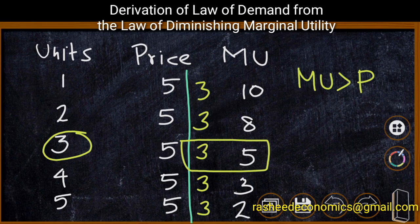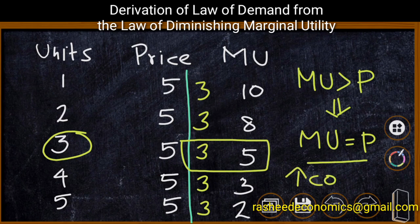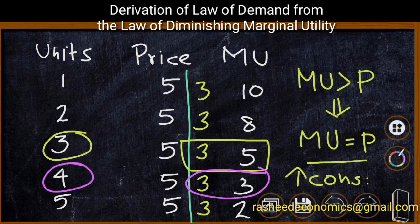In order to reach equilibrium, we have to equate marginal utility with price. That is possible by an increase in consumption, because in order to equate marginal utility with price, we need to increase consumption — then only the marginal utility will decrease. Therefore, the consumer will reach equilibrium at the 4th unit of consumption where price is equal to marginal utility. That is, marginal utility is 3 and price is 3.